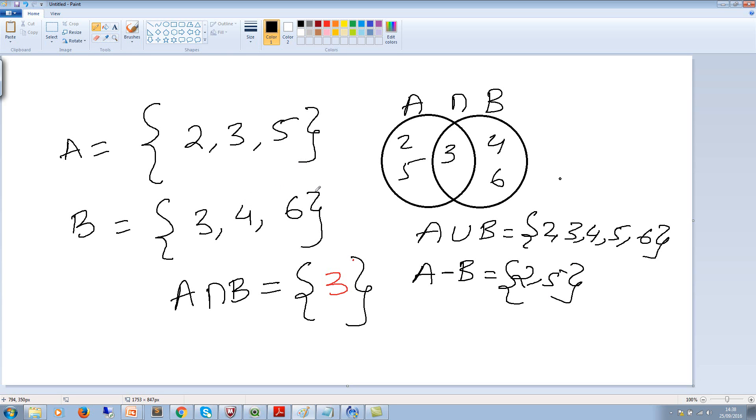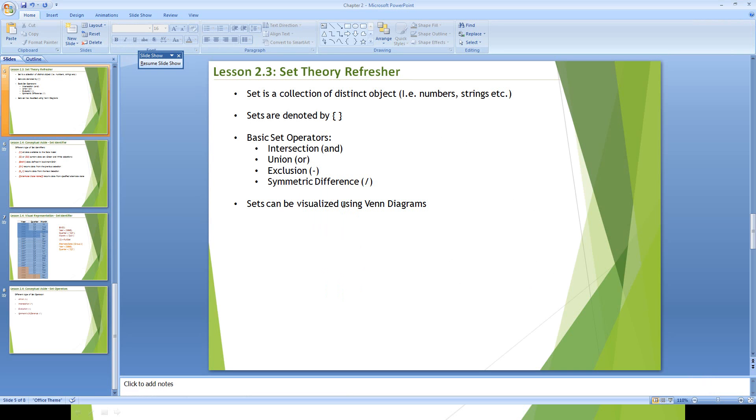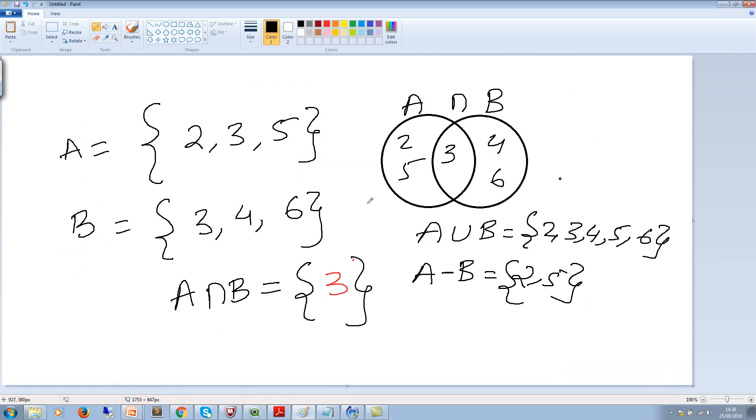And then finally, symmetric difference. It's written as A triangle B. The triangle symbol denotes that it is symmetric difference. In here, we write all the values which are either in A or in B, but not common. So we write 2, 5, 4, and 6. So that is a symmetric difference.